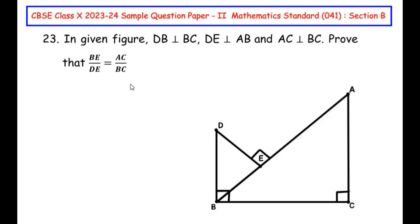Hello and welcome to my channel. In this video we are going to solve the 23rd question from CBSE Class 10 2023-24 sample question paper set 2 for mathematics standard with subject code 041, section B, where each question is of two marks. This question has an OR question as well, and both questions are from the triangles chapter.